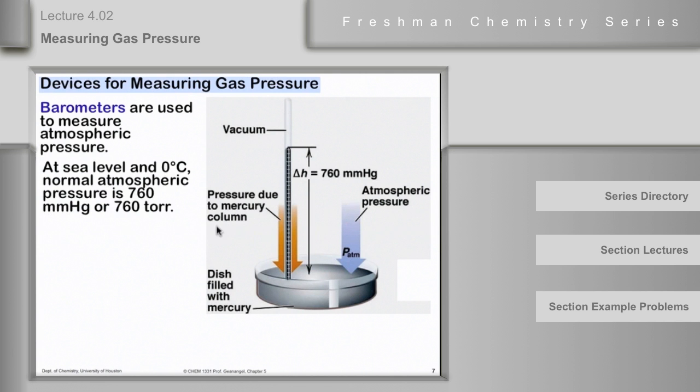Torricelli invented this kind of barometer. So in addition to calling it 760 millimeters of mercury, it is also called 760 torr. In this case, 1 torr is equal to 1 millimeter of mercury height of the mercury column - 1 millimeter of the 760 millimeters. One could say that the normal atmospheric pressure is 760 torr.